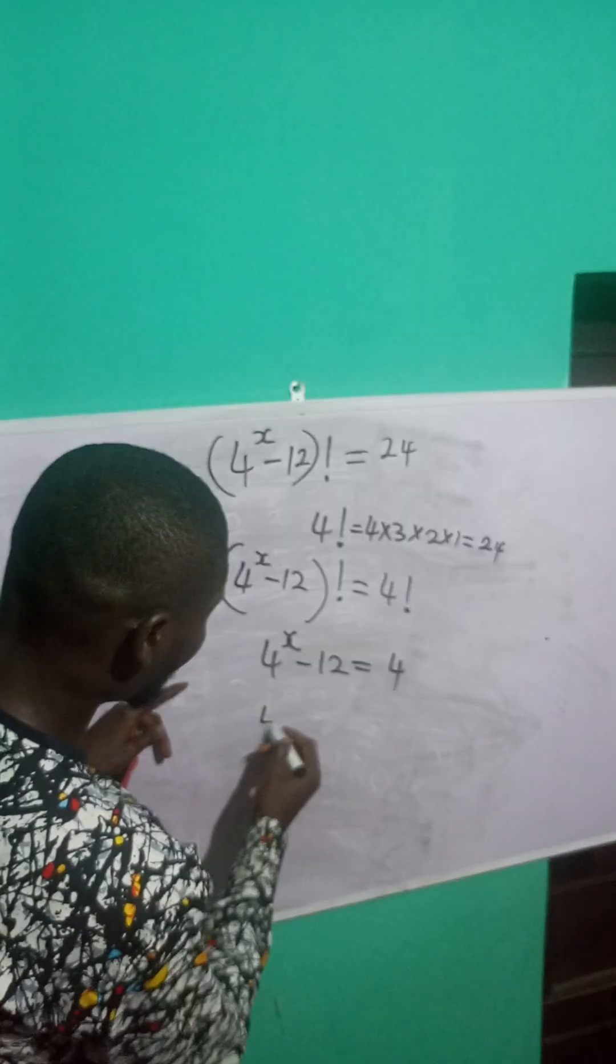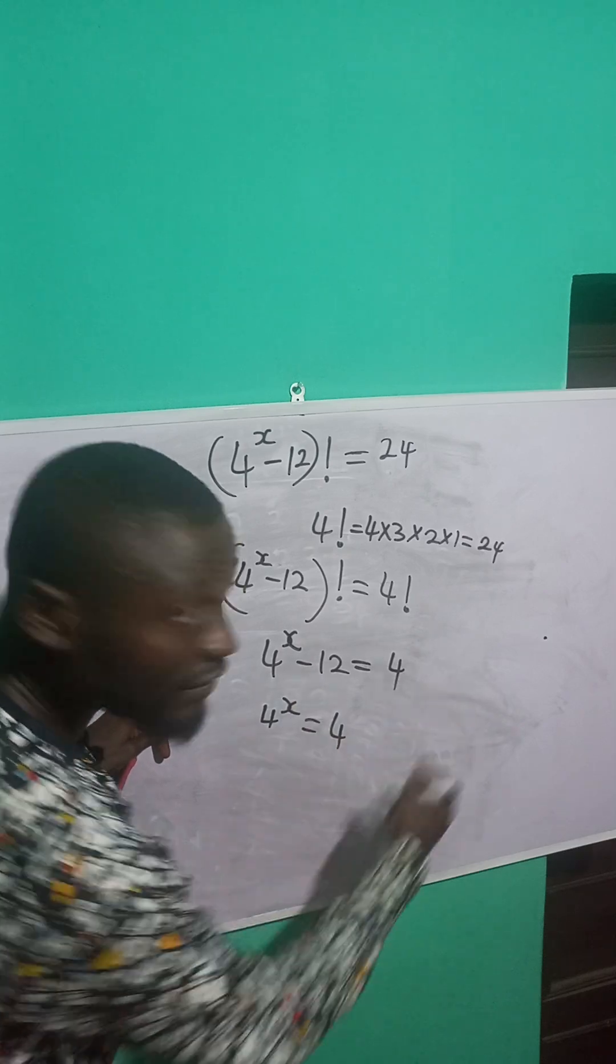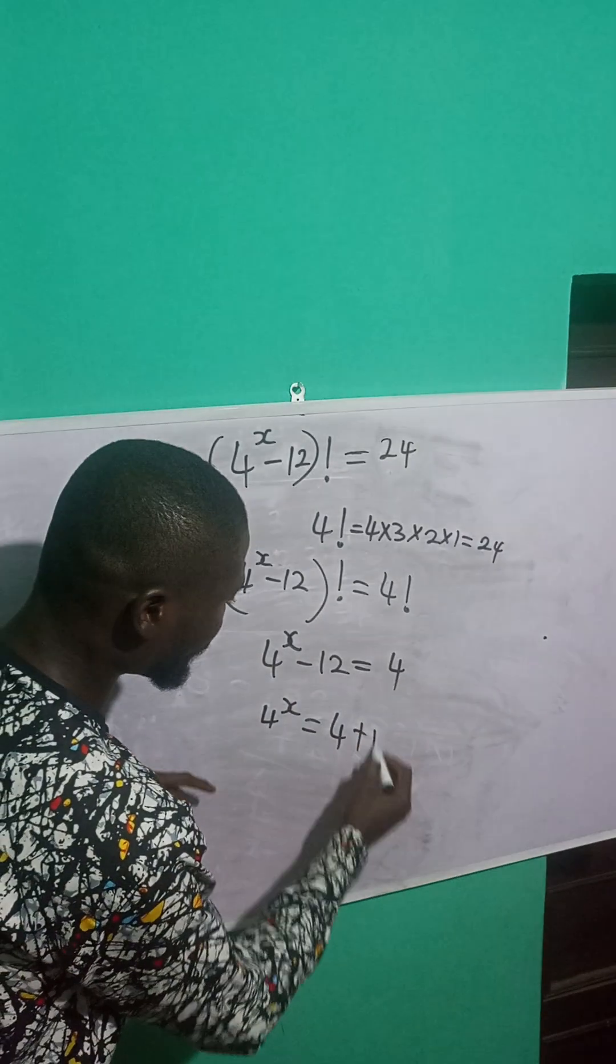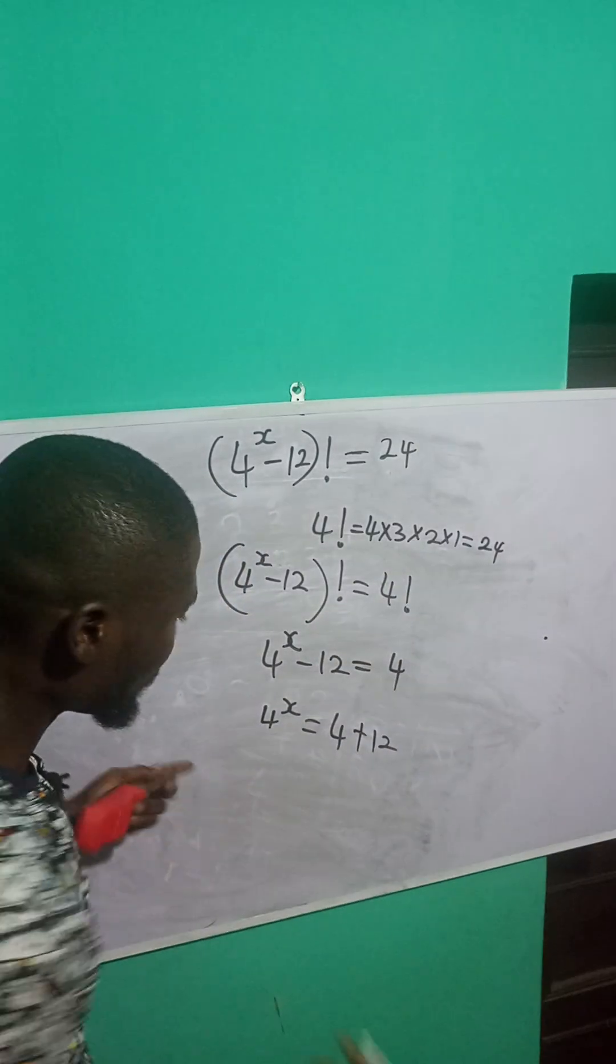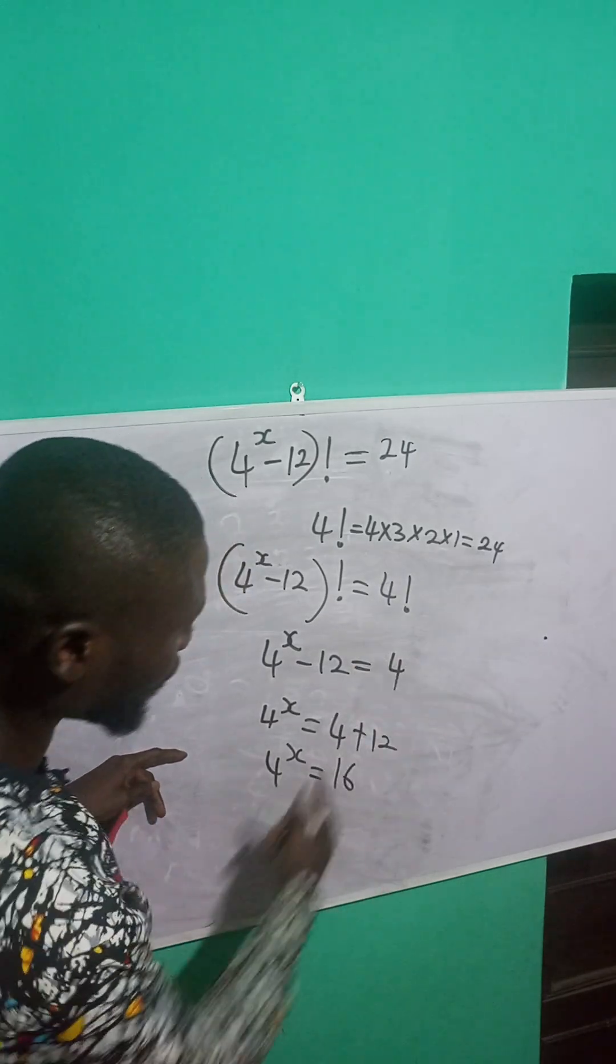So let us just equate like things. So I have 4 raised to power x minus 12 is equal to 4. Minus 12, if I transpose it to the right hand side, it becomes plus 12. So 4 raised to power x is equal to what? 16. 4 plus 12 is 16.